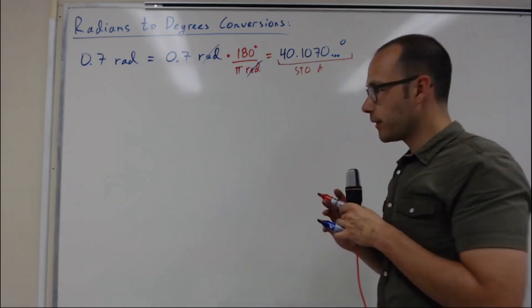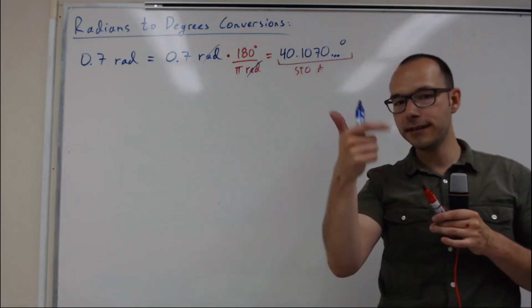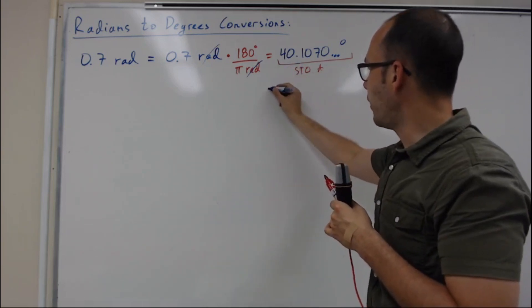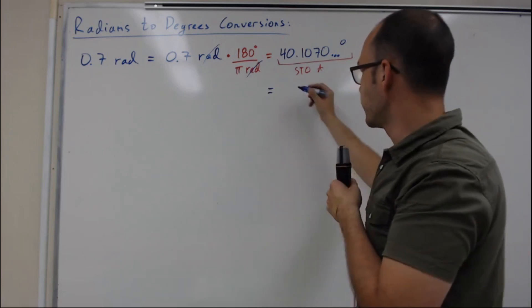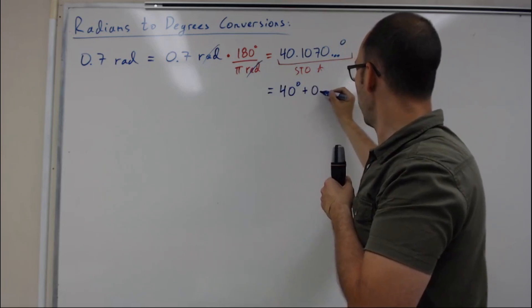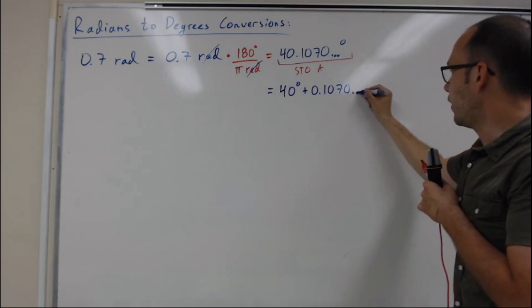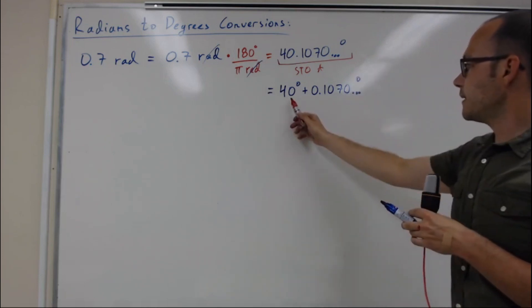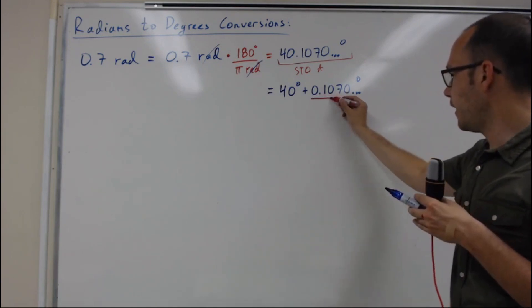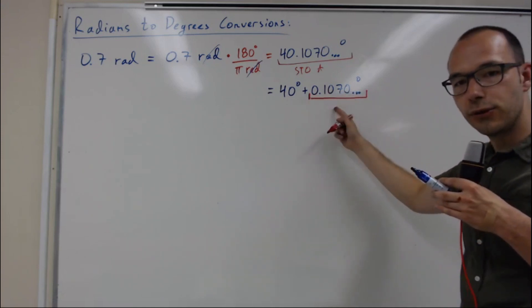Now we have to convert these into degrees, minutes, and seconds. We already have the number of complete degrees, which is 40. So it's 40 degrees plus 0.1070... degrees — the whole number part and the decimal part. The decimal part is what we will convert into minutes and seconds.